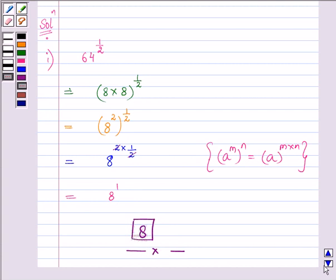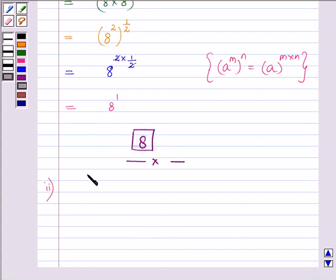Proceeding on with the next part. Now we are given 32 to the power 1/5. Similarly as we did in the above question also, we need to write 32 as the 5th power of a number. We can write 32 as 2 multiplied by 2 multiplied by 2, 5 times, right, because their product will be equal to 32 only.